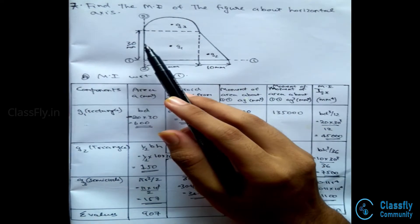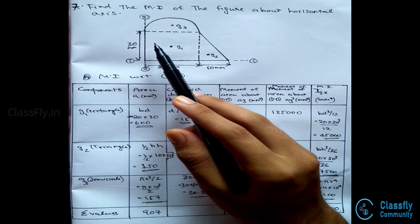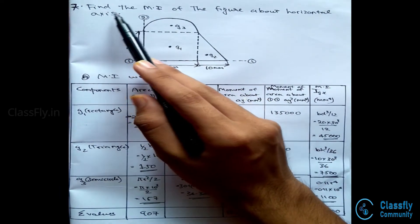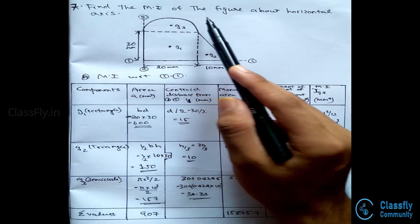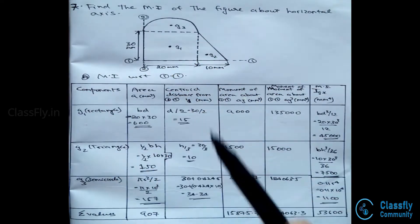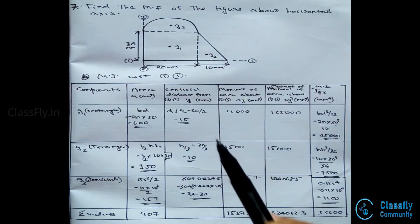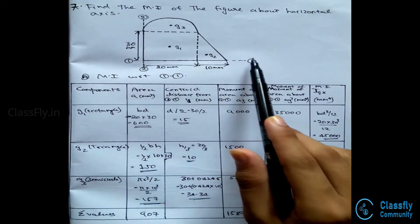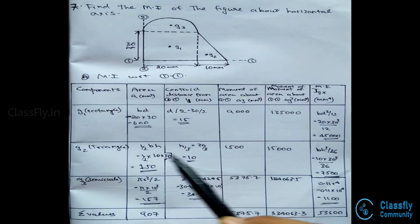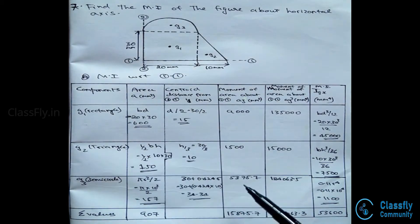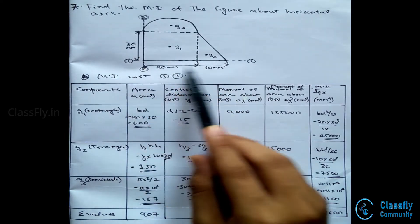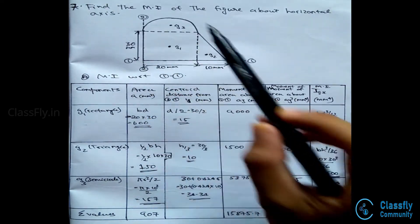Hi guys, today let us solve another numerical based on the concept of moment of inertia. Find the moment of inertia of the figure about the horizontal axis — hence we have to find the moment of inertia with respect to axis 1-1. Let us draw the table; the components will include the rectangle G1, the triangle G2, and the semicircle G3.